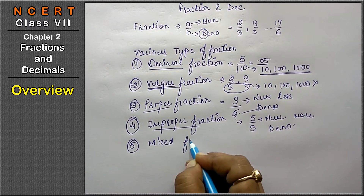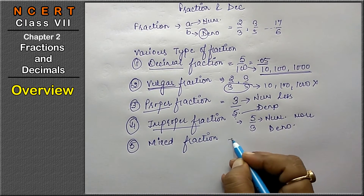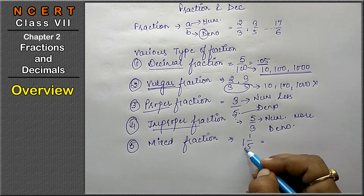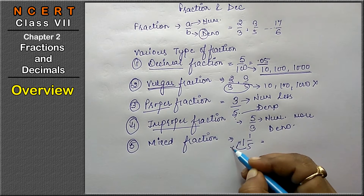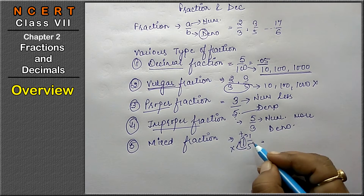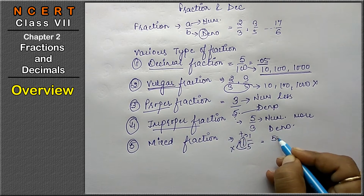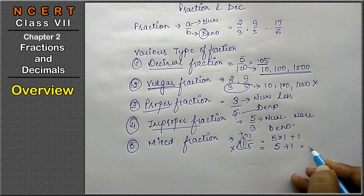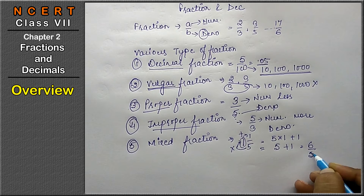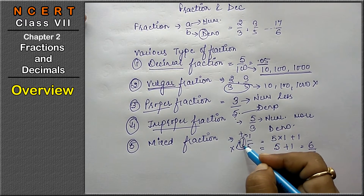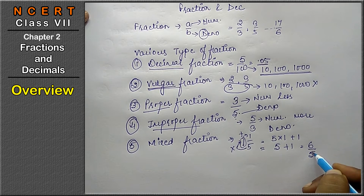The fifth type is the mixed fraction. A mixed fraction is in the form like 1 whole 1 upon 5. To convert it, we multiply the denominator by the whole number and add the numerator: 5 × 1 + 1 = 6, giving us 6 upon 5. So mixed fractions are mainly converted into improper fractions.